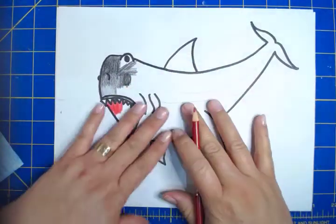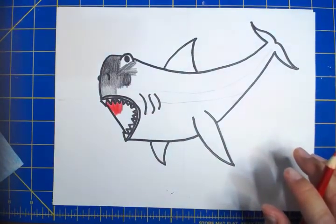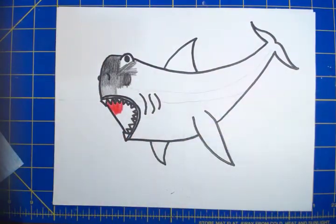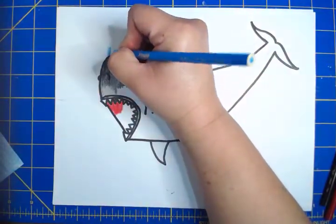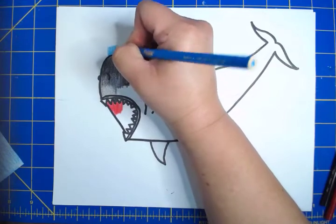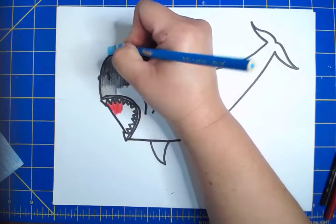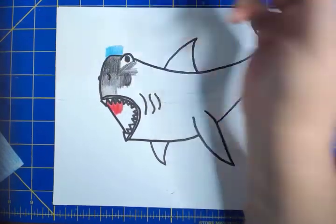And I don't like to leave any white on the paper. So, you know, he's in the ocean. I would color the area surrounding him blue or any color you want. Not really. This is your shark.